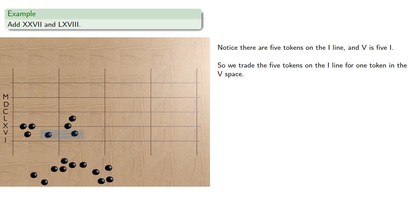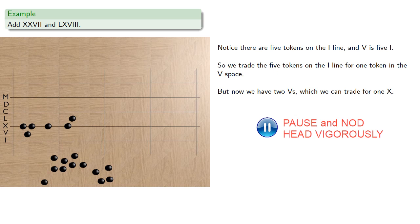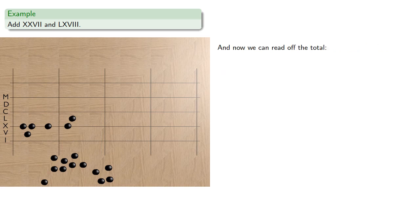But now we have two V's, which we can trade for one X. And now we can read off the table.